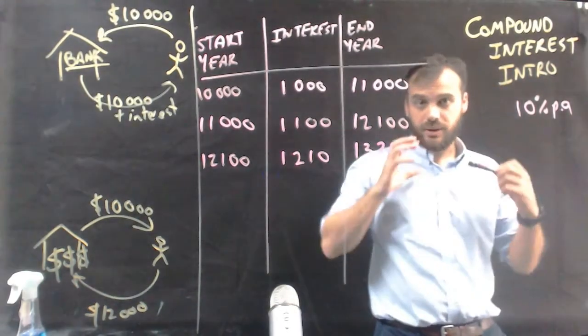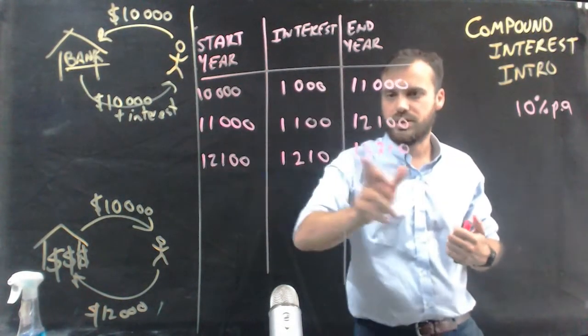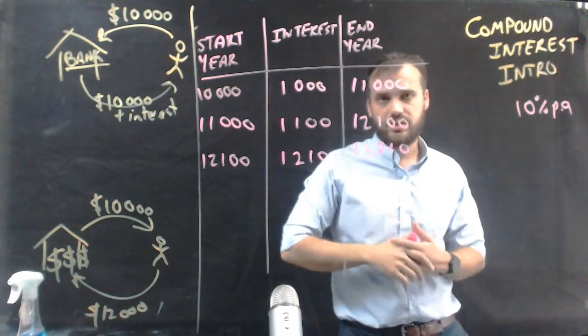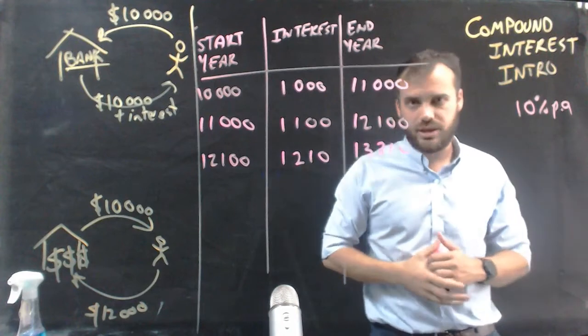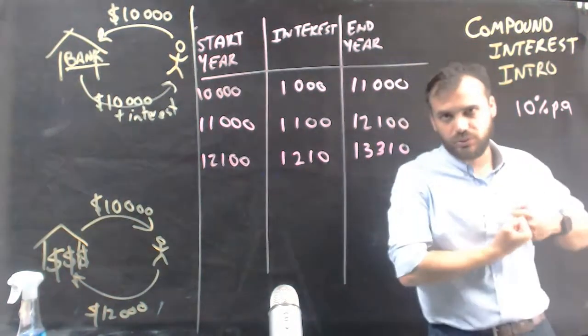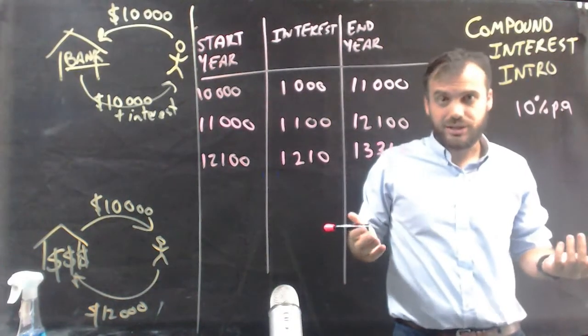So our money has been with the bank for one year, two years, three years. We started with $10,000. And at the end of three years, we have $13,310 that we can pull out and go buy like a not a great car.